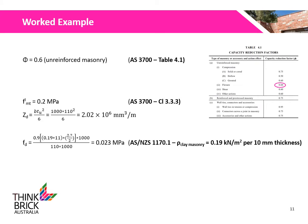As discussed before, the design compressive stress from the wall's dead load and other factors contribute to the bending capacity of the wall. The design compressive stress acting on the bed joint at mid-height of the wall, as a result of the wall's self-weight, is calculated to be 0.023 MPa, given that the density of the clay masonry is 0.19 kN per metre squared per 10 mm thickness.